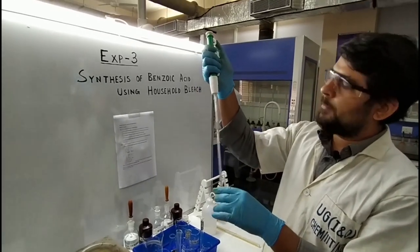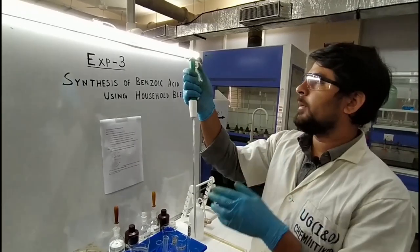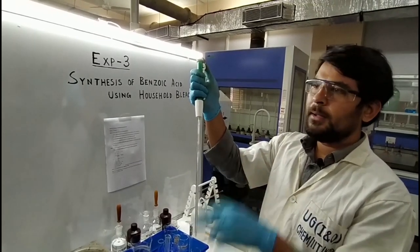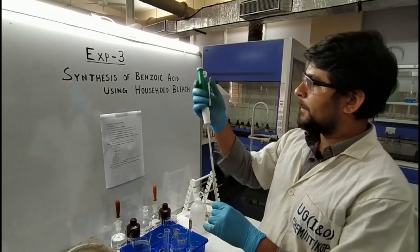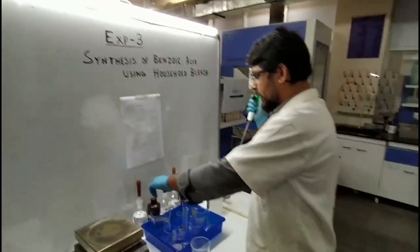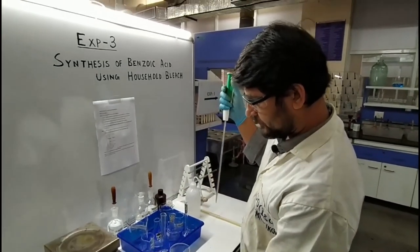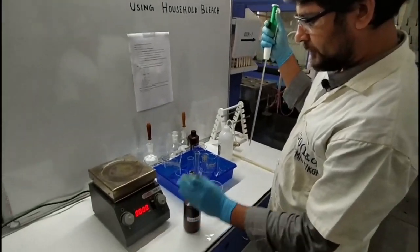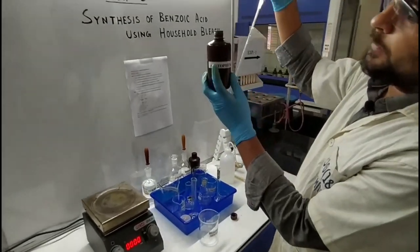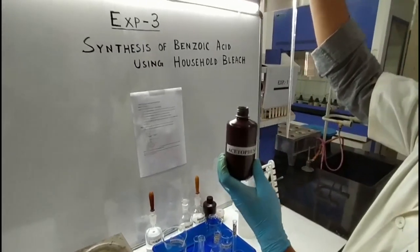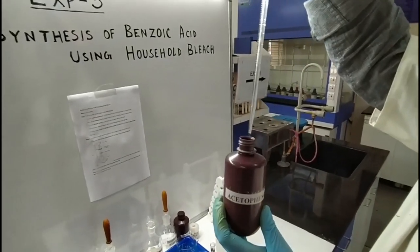If we scroll the pump up, the solution will automatically go up. If we scroll it down, the solution will fall into the respective container. So I am going to take the Acid of Enol — how much? 0.72 ml. This is the 1 ml mark.